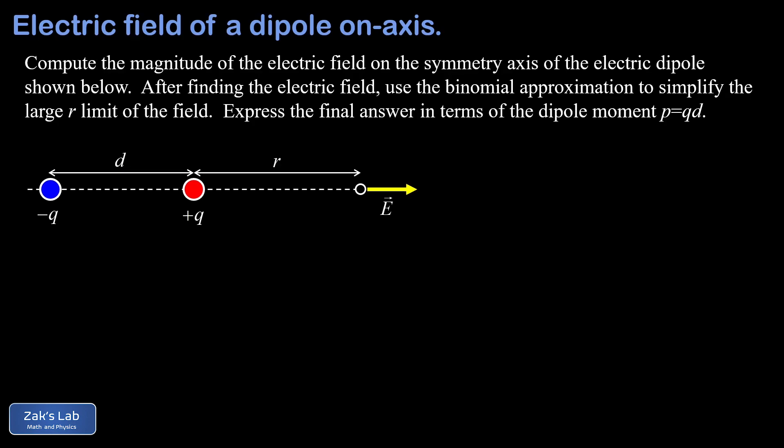So our first goal is to write down the electric field at this observation point, but then as we see in the statement of the problem, the interesting part is that we want to take the large distance limit of our answer and use a binomial approximation to explore the r dependence of the field magnitude. Finally, we want to express our final answer in terms of the dipole moment, which is defined to be p equals q times d.